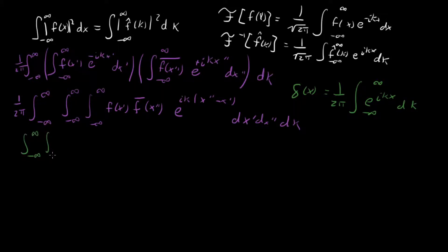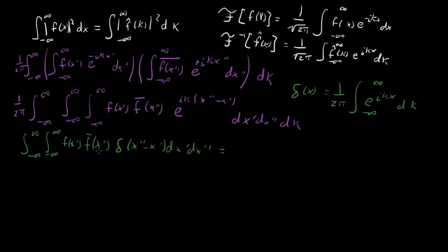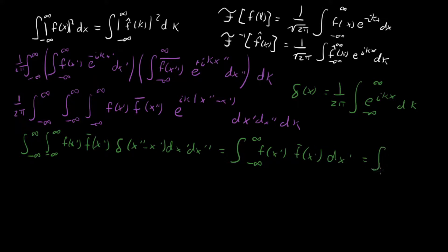So what are we left with? We have the x prime and x double prime integrals: f of x prime, complex conjugate of f of x double prime, delta of x double prime minus x prime, dx prime dx double prime. This is an easy delta function integral. Doing the x double prime integral, we're left with f of x prime times the complex conjugate of f of x prime dx prime, which is also known as the integral from minus infinity to infinity of the modulus squared of f of x prime dx prime.